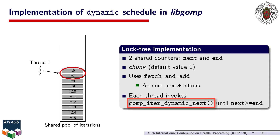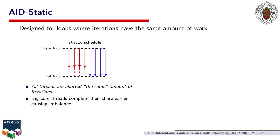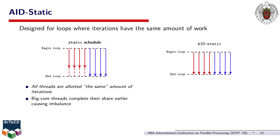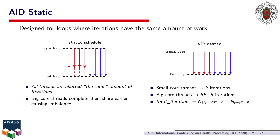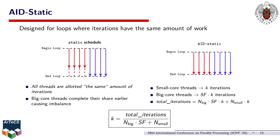Our first proposed method, AID-static, was designed for parallel loops where iterations have a very similar amount of work. When using the conventional static approach on AMPs, big core threads complete their share of the loop earlier than small core threads, leading to ineffective utilization of big cores. Our goal with AID-static is to make sure that all threads complete their allotted work ideally at the same time. To make this happen, this strategy assigns k iterations to small core threads and SF times those iterations to big core threads, provided that all available threads complete all loop iterations. This is the expression we use for calculating k. The main problem is that the speedup factor is loop-specific, and unless profiling is used, the SF is unknown at the beginning of the loop.